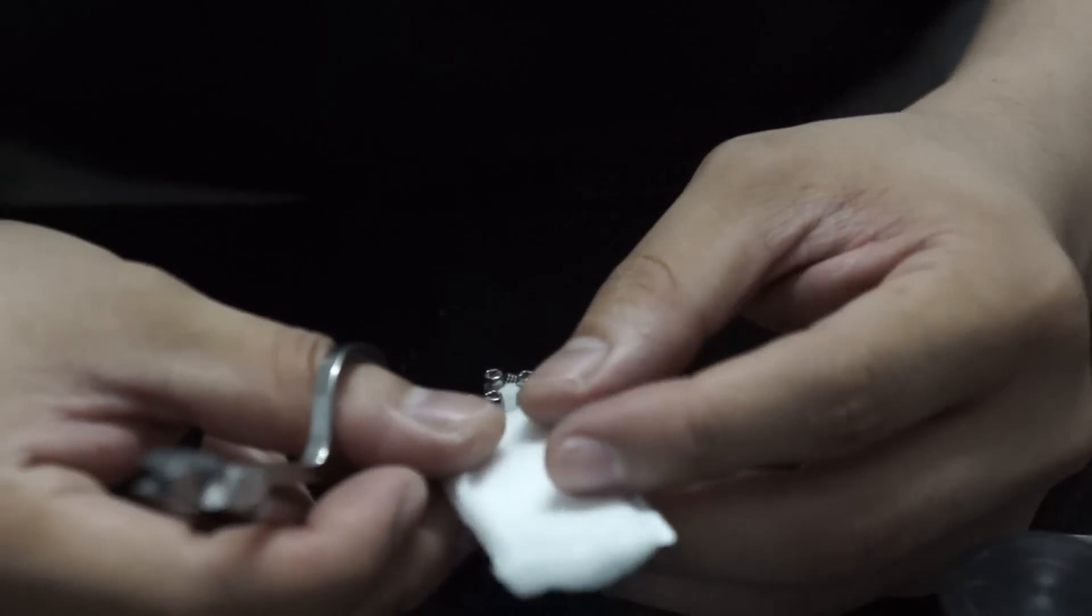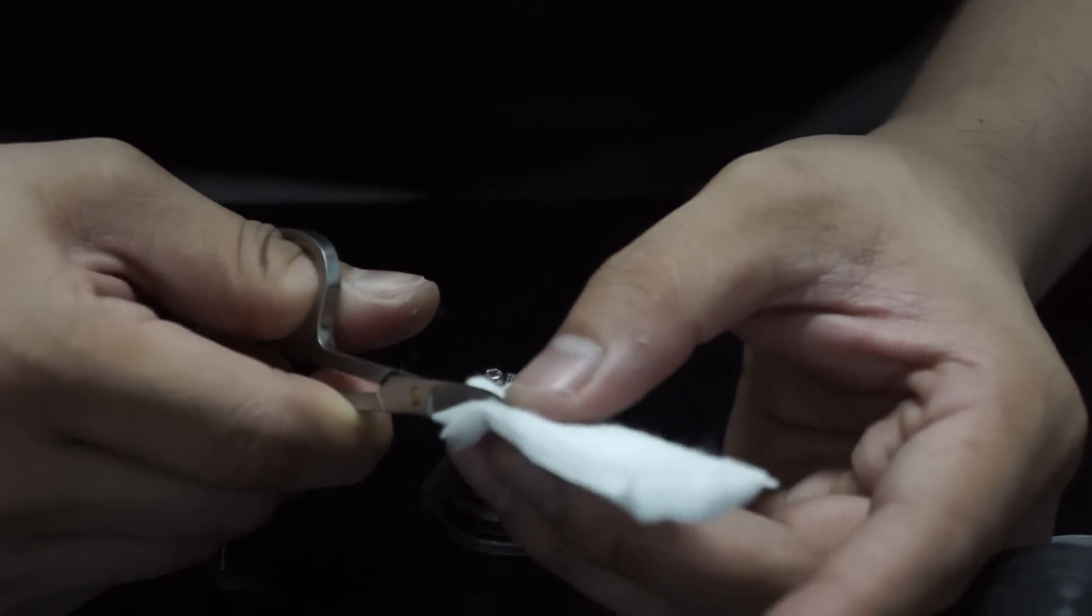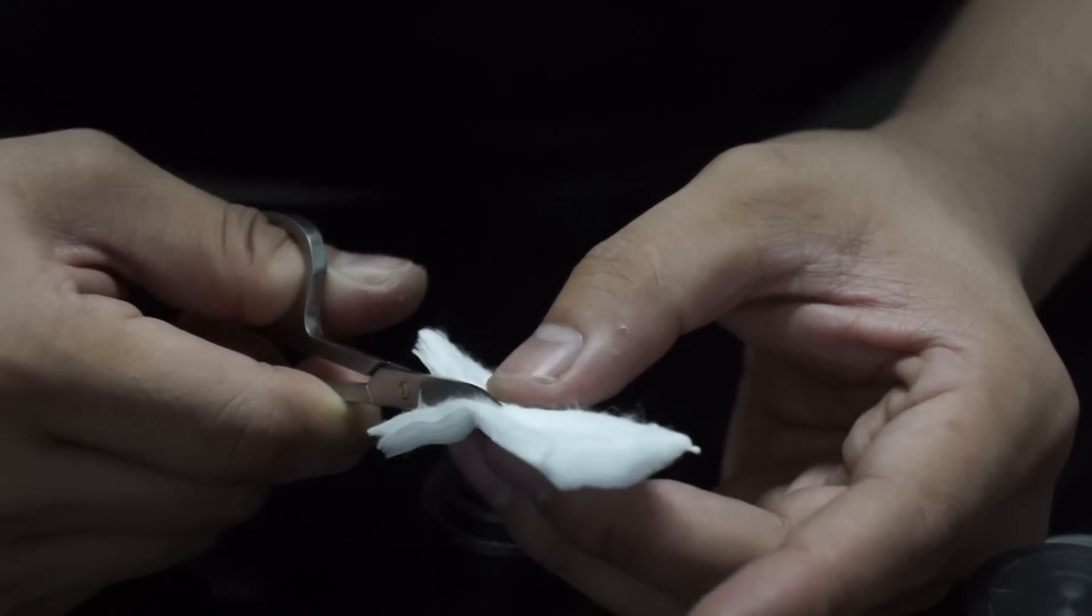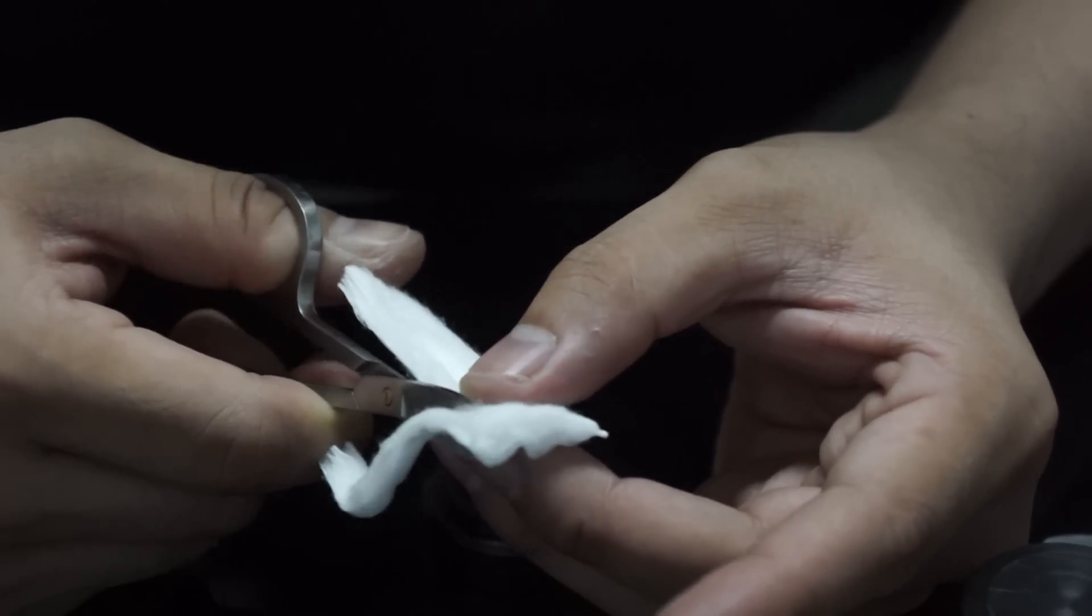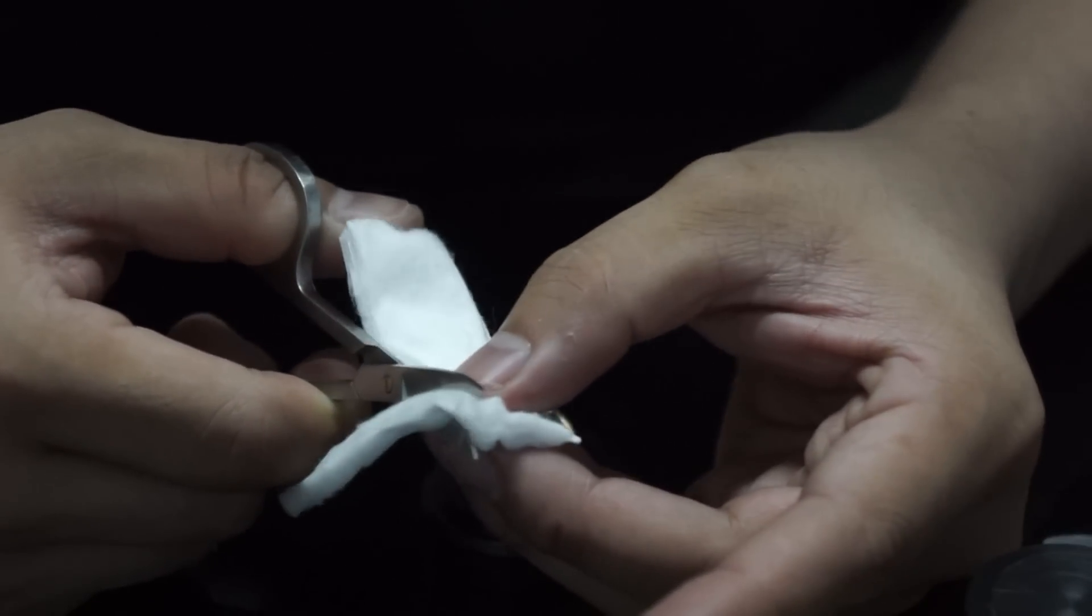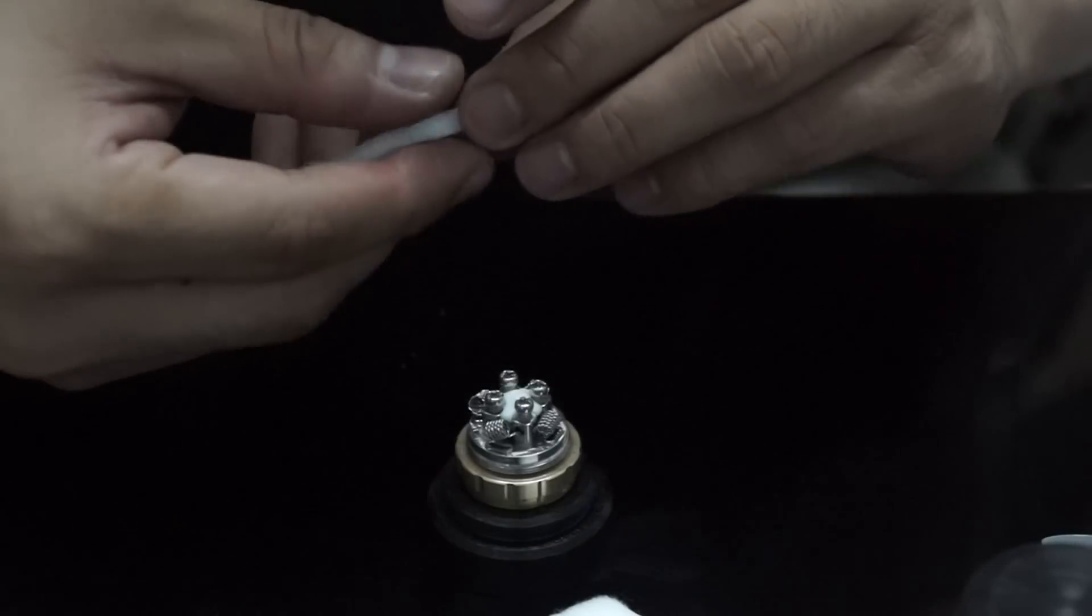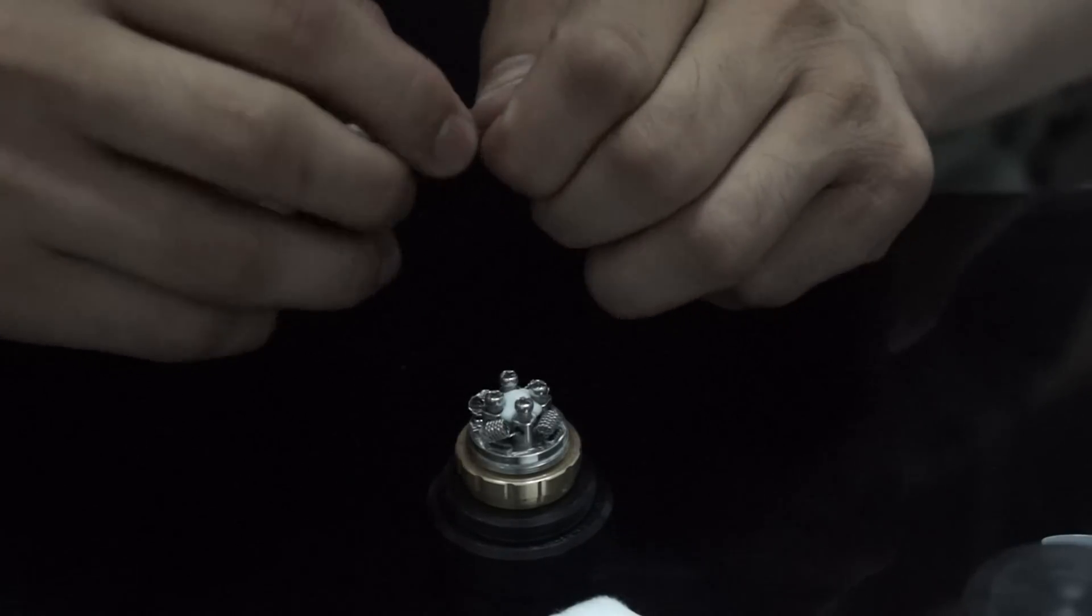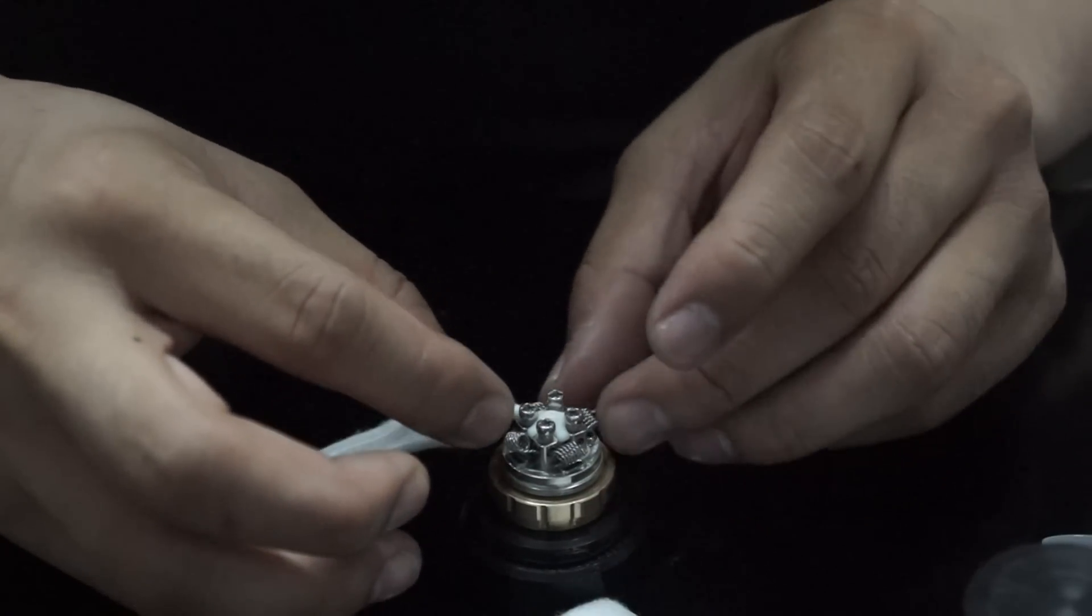For more advanced vapers, what you can probably do is just use one strand of cotton and use that for all four coils that you have in your geyser. But what I'm going to do right now is I'll probably do two sides for every strand.